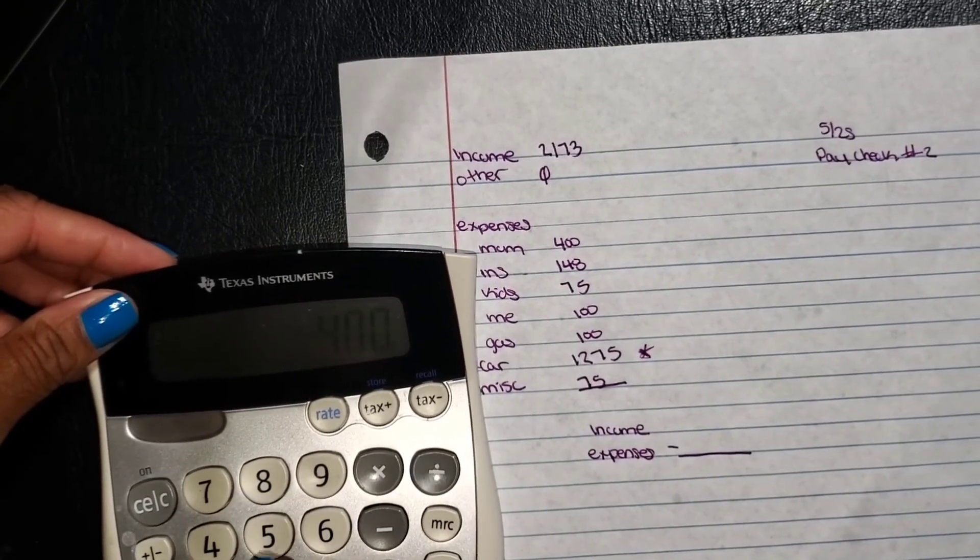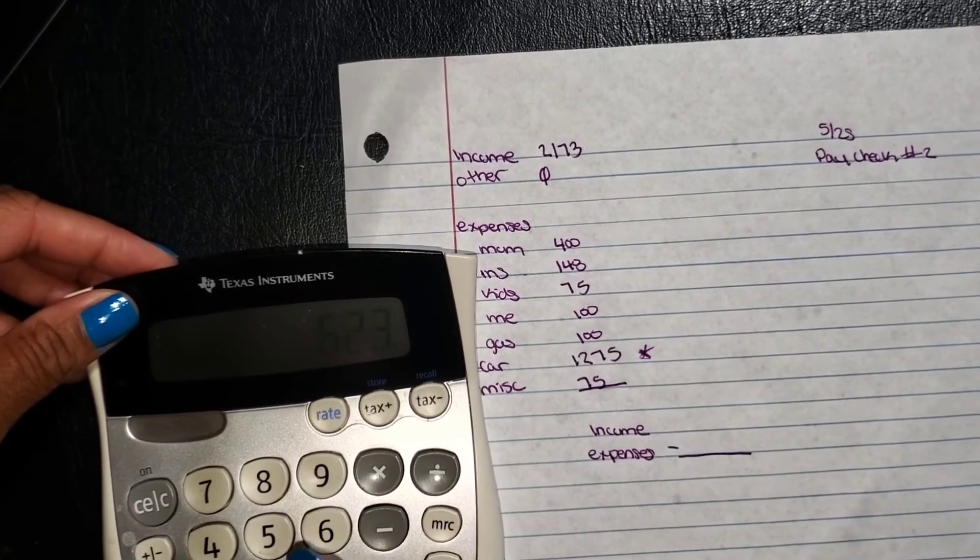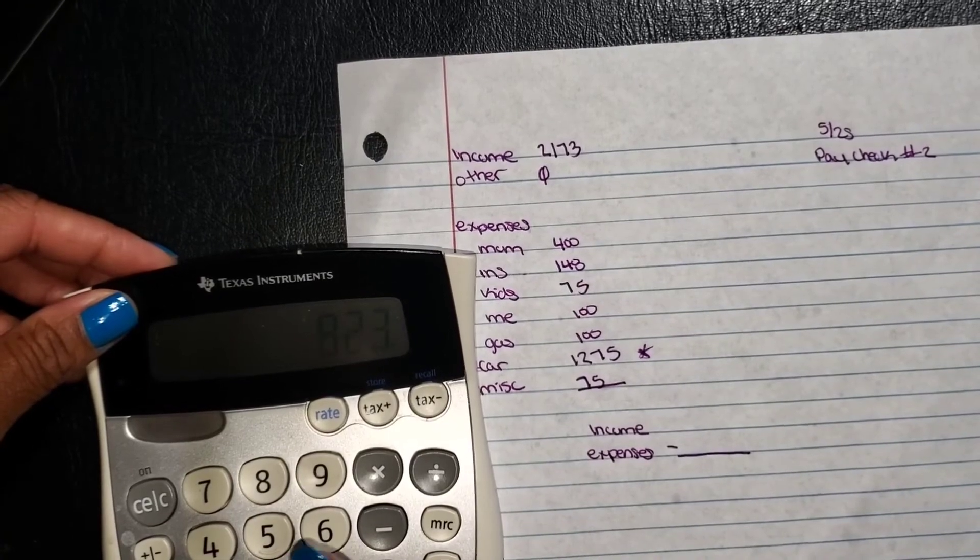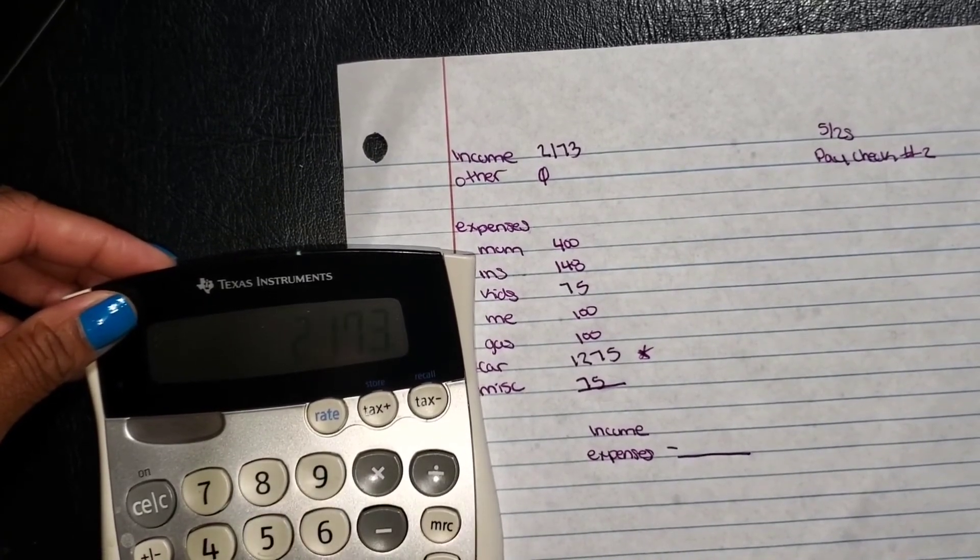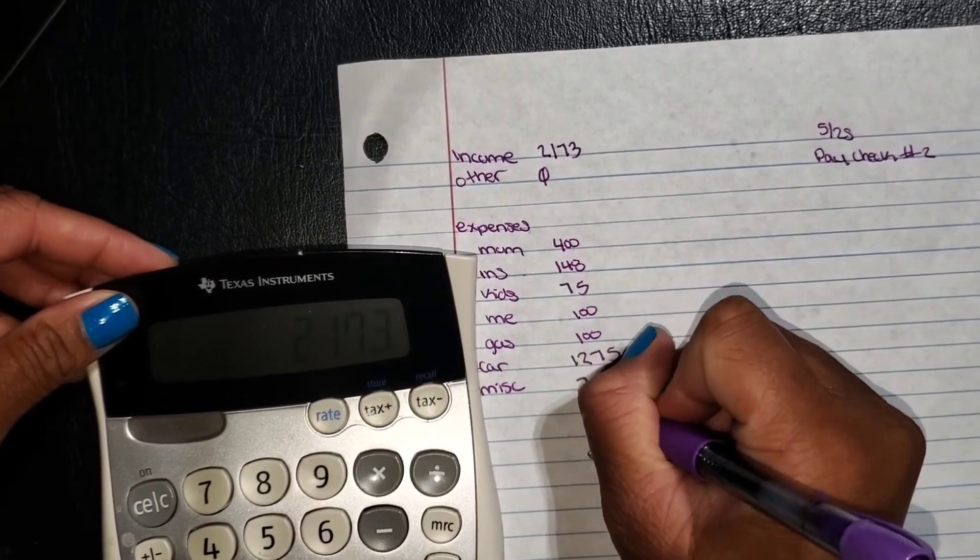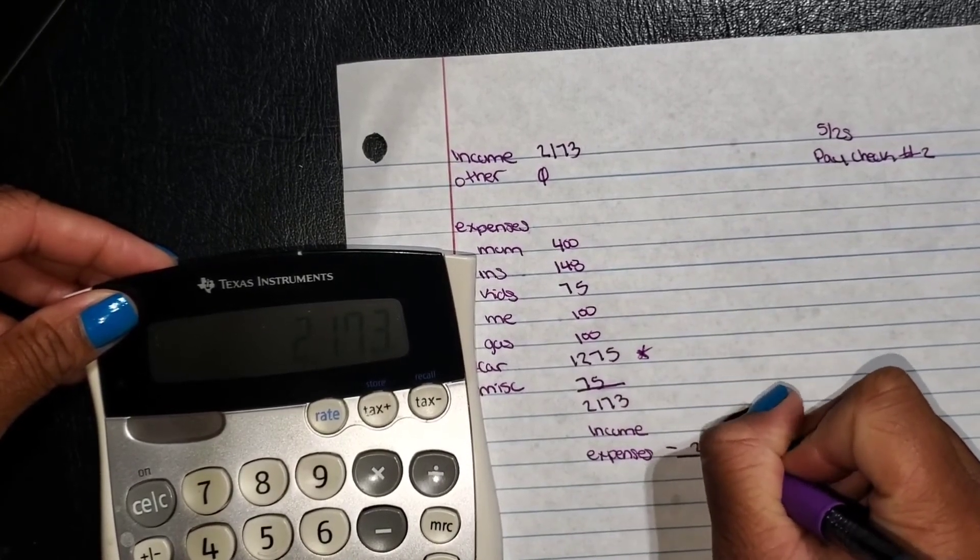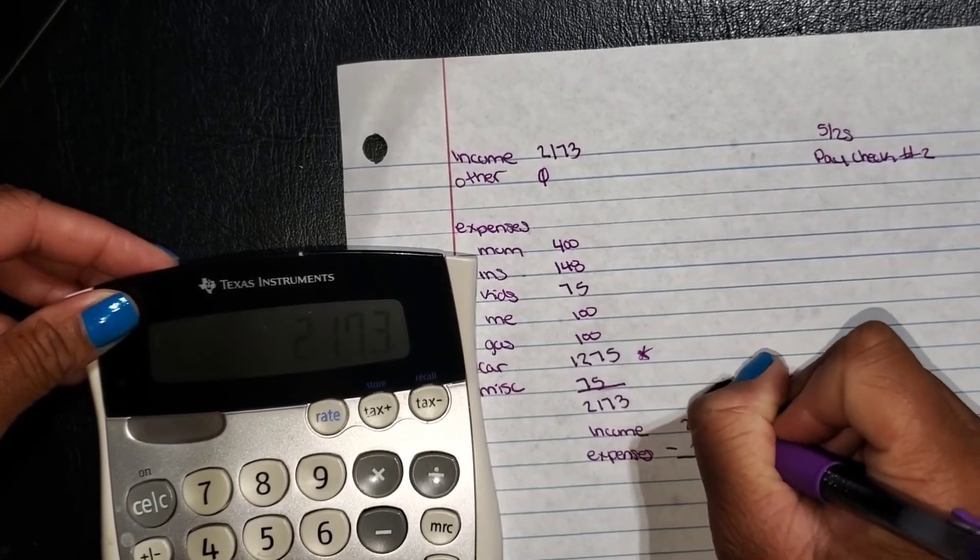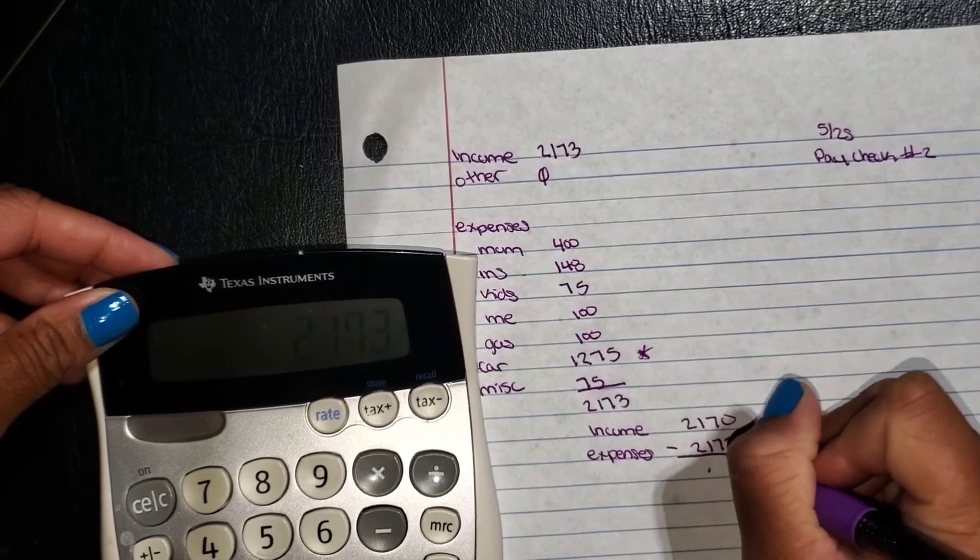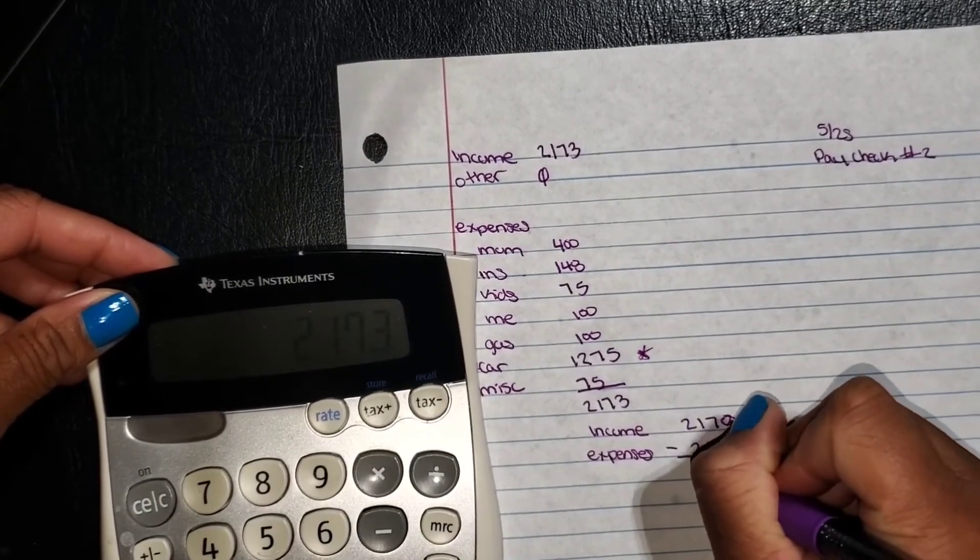$2,173 is my expenses. That is also my income. And so all of that zeros each other out.